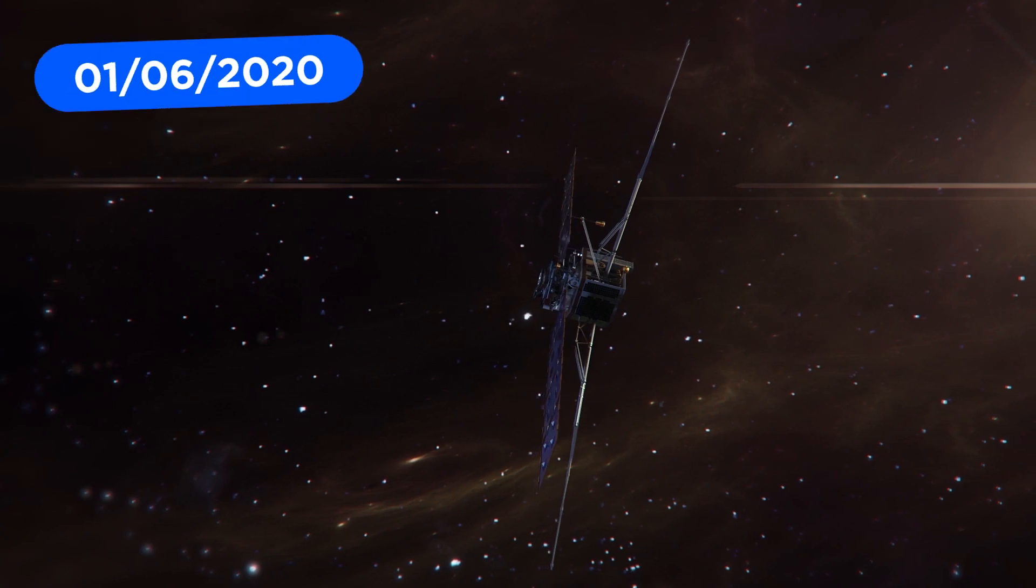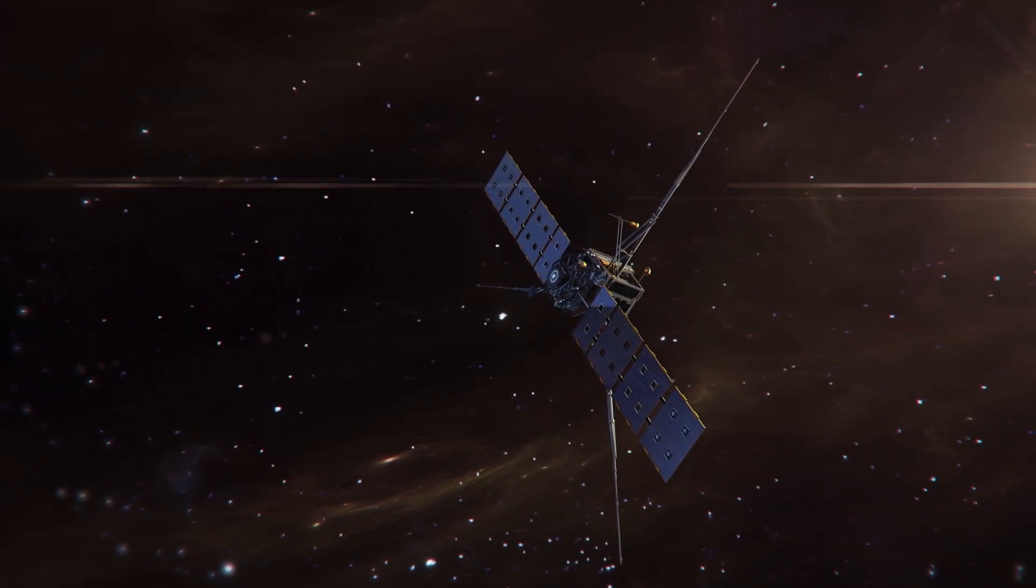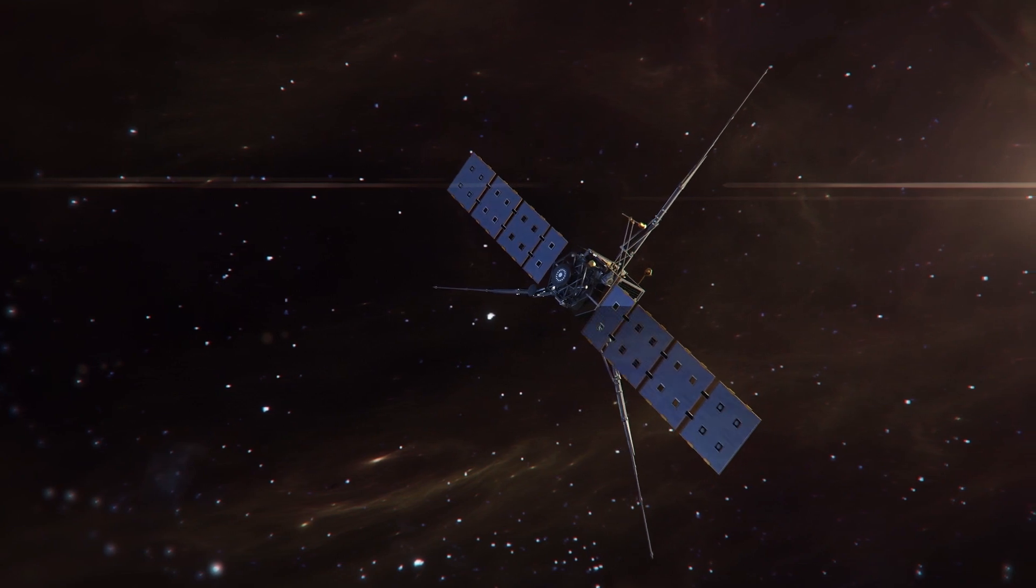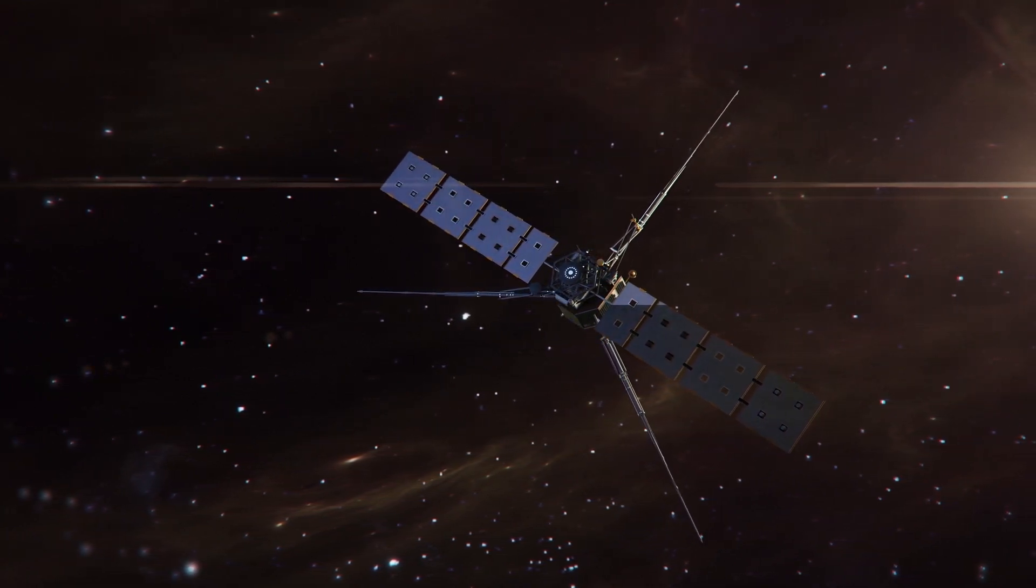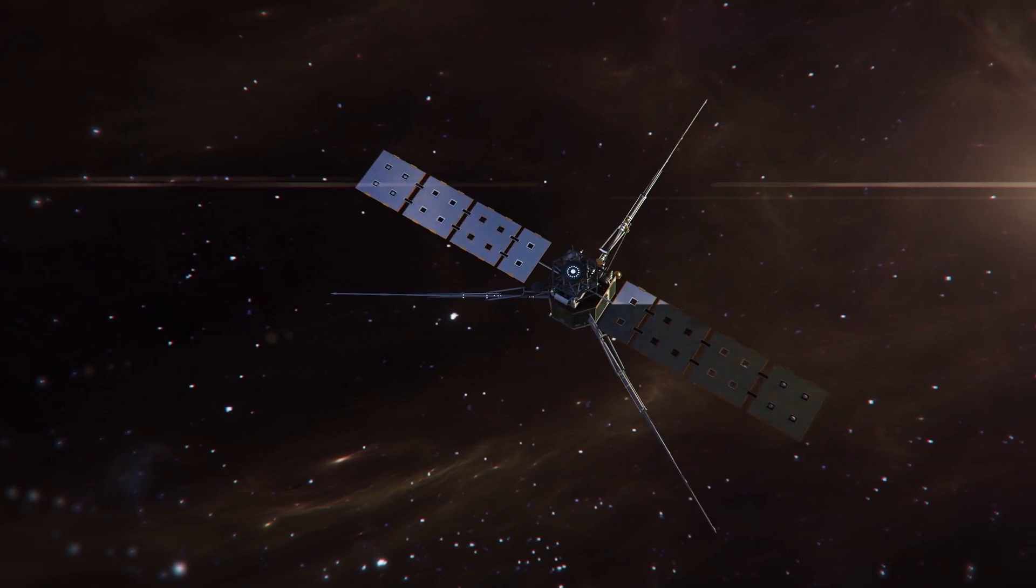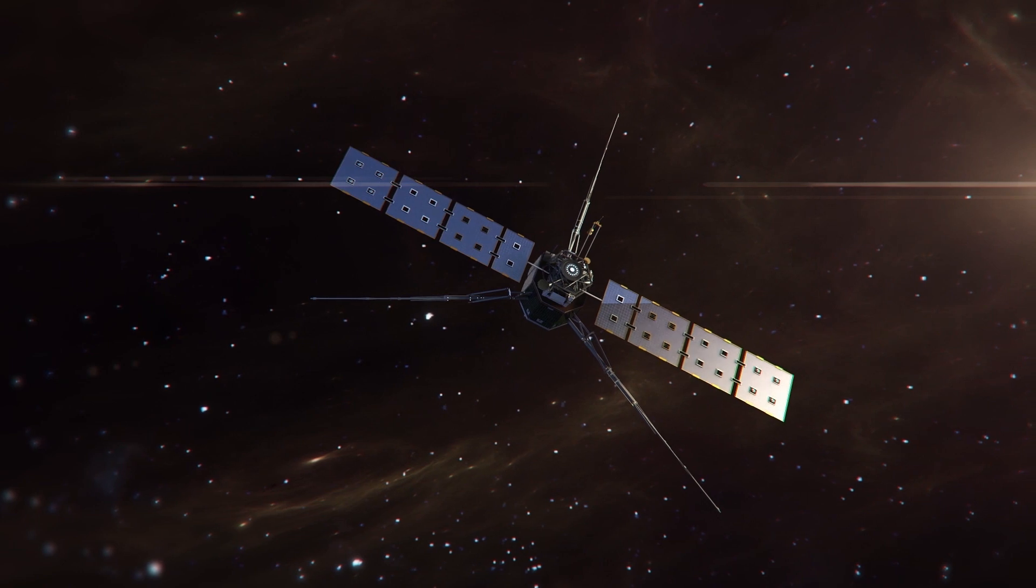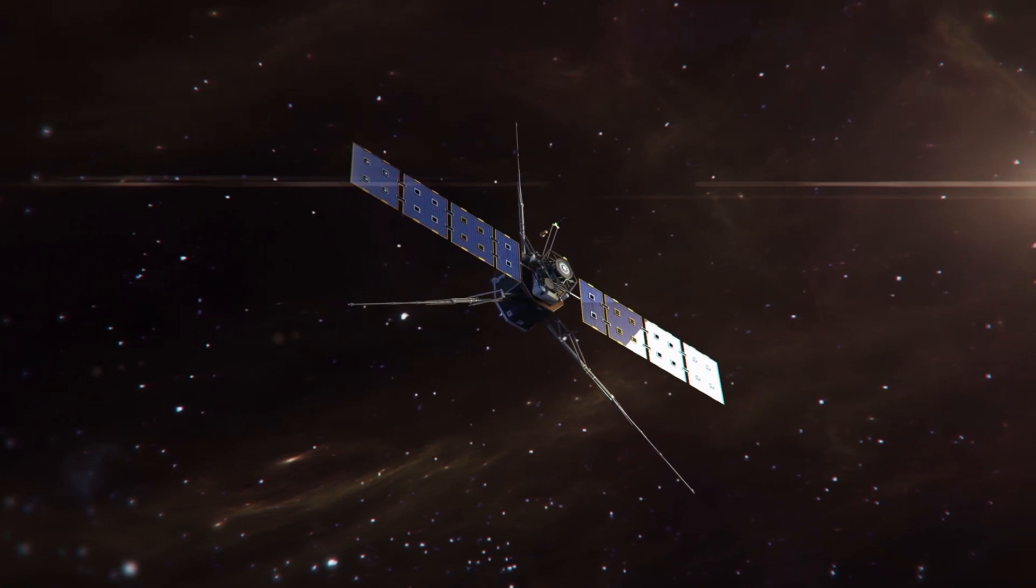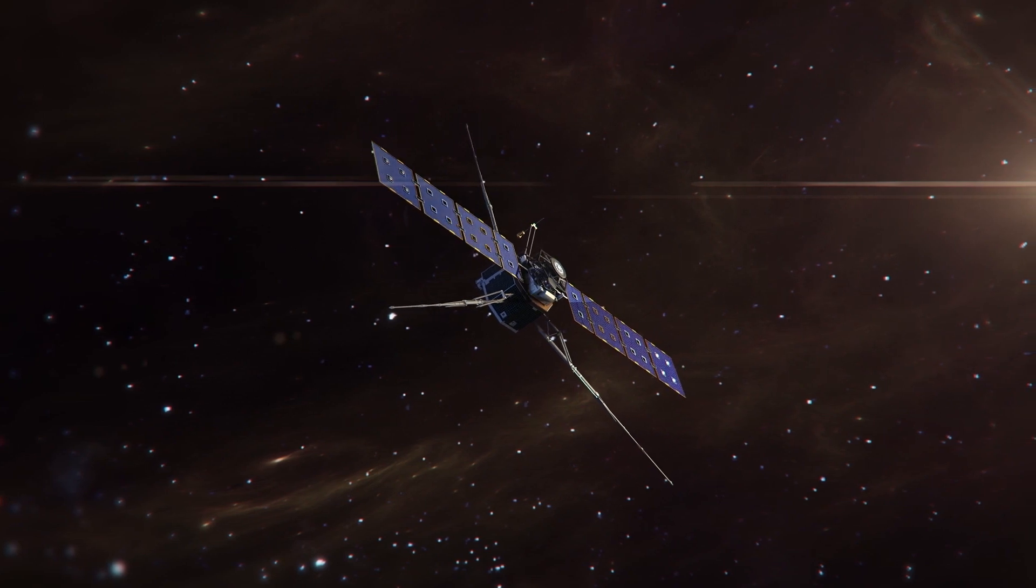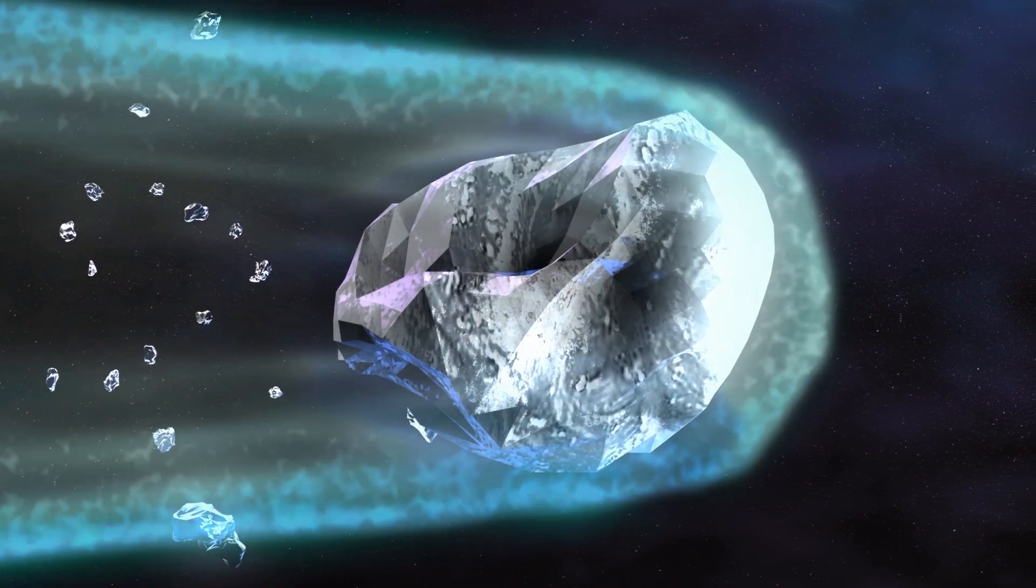The European Space Agency Solar Orbiter has been given the rare opportunity to conduct some bonus science in a serendipitous rendezvous with the tales of the comet Atlas during the next few days. The Solar Orbiter was launched on February 10, 2020, and is en route to the inner solar system to study the Sun and inner heliosphere. The encounter with Atlas had not been planned. Atlas was discovered on December 28, 2019.